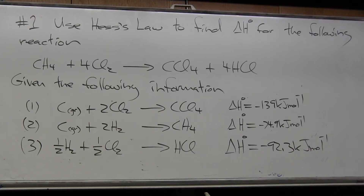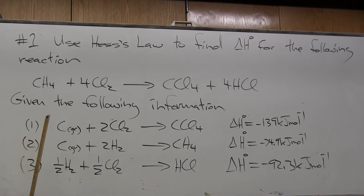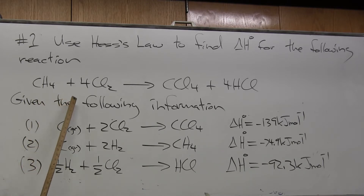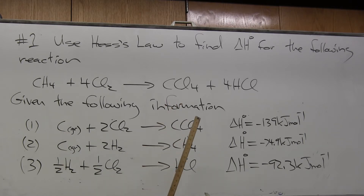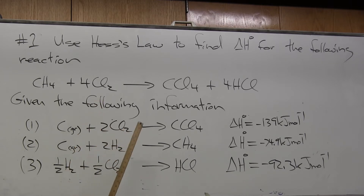This is problem number one on practice midterm number two. The question is: use Hess's law to find ΔH° for the following reaction. The reaction is CH4 plus 4Cl2 goes to give CCl4 plus 4HCl — that is, methane plus four chlorines gives one carbon tetrachloride and four hydrogen chlorides.